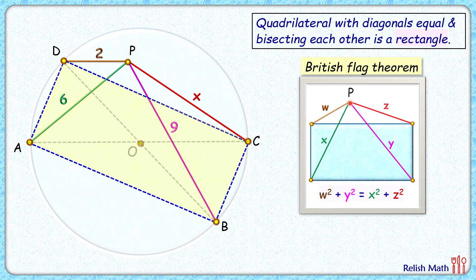That is, the distance of this point P from the opposite vertices is w and y, and another set is x and z. And sum of their squares will be equal. The proof of the British Flag Theorem, I'll provide a link in the comment section.